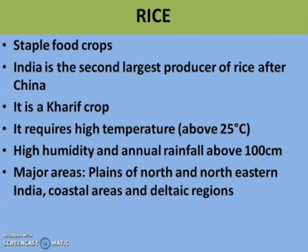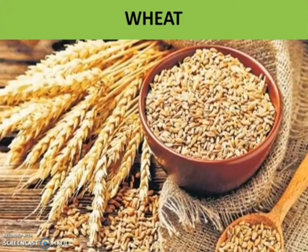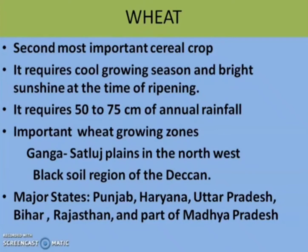The next important food crop is wheat. It is the second most important food crop in India. It is a Rabi crop and is the main food crop in North and Northwest India. It requires average rainfall of 50 to 75 centimeters, a cool growing season and bright sunshine at the time of ripening. There are two important wheat growing zones: the Ganga-Sutlej plain in the Northwest and the black soil region of the Deccan.